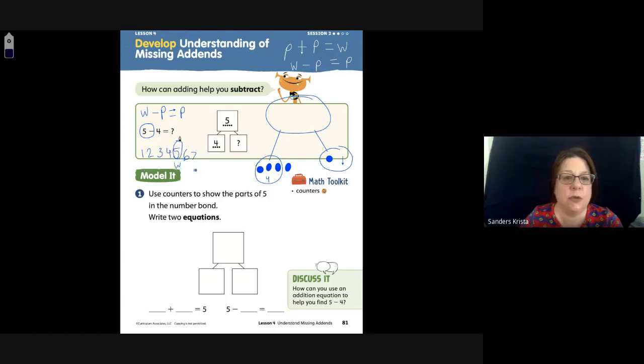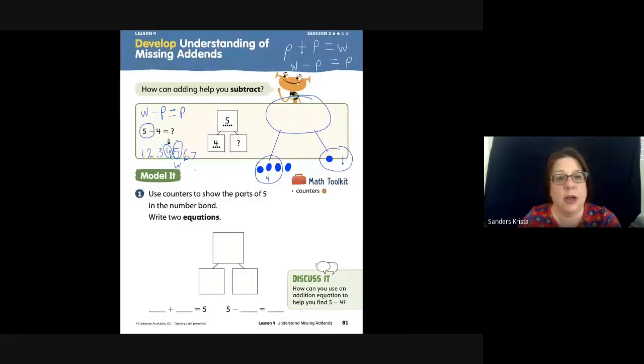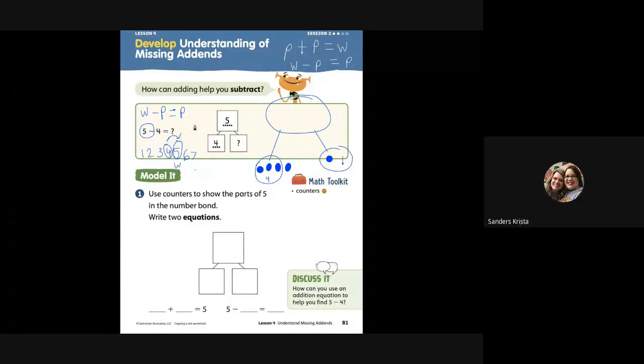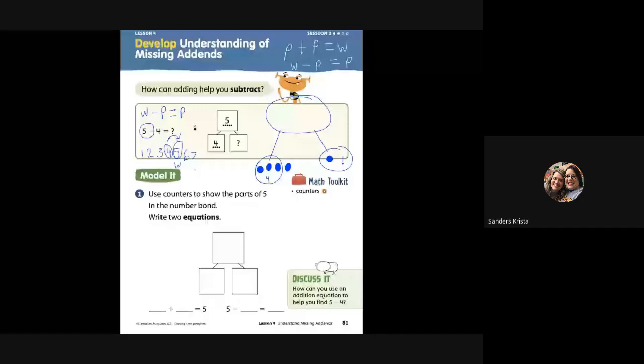Label it my whole. And the part that I know is four. Circle the four. I know I can count on from my part that I know up to the whole. So I start with four and I count on. Four, count on, five. So what am I doing? I'm adding one more and putting the two parts together to create that whole. So the missing part is one, and the whole is five.